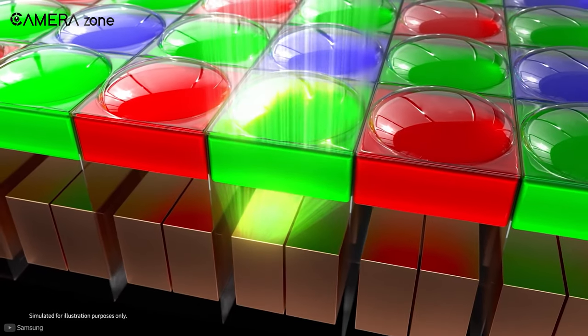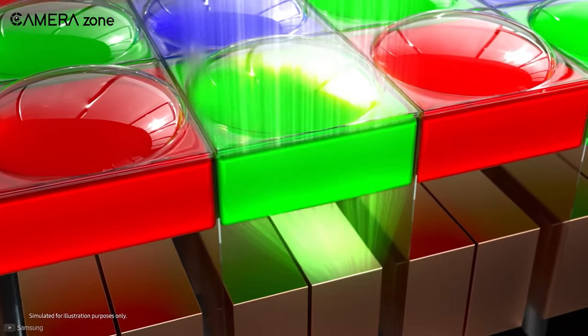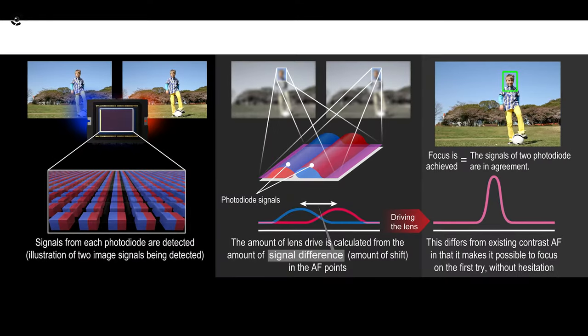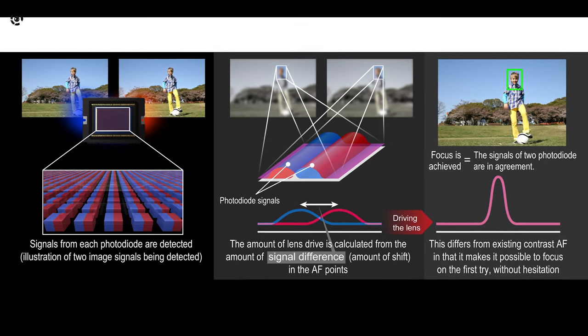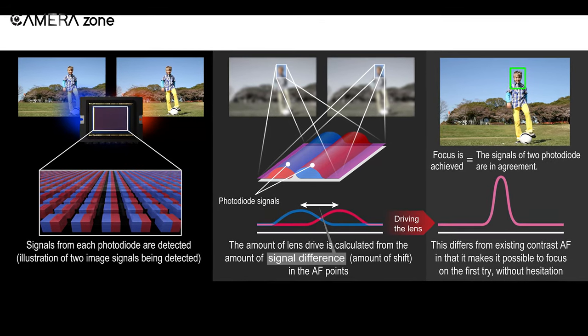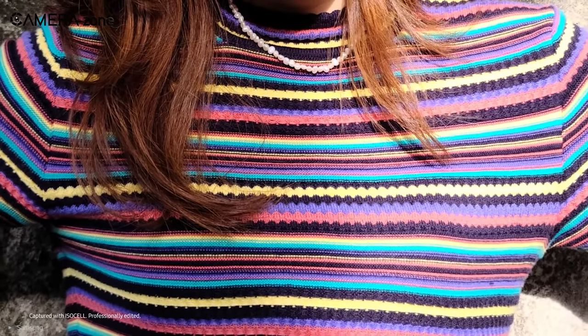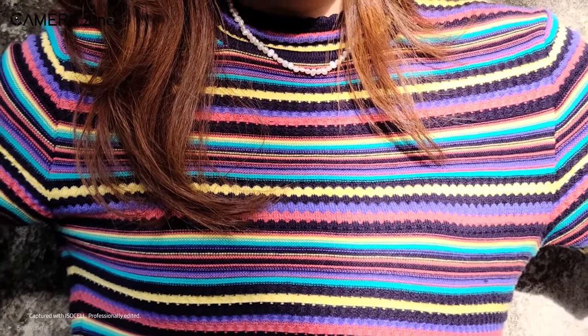The phase detection autofocus system consists of a sensor and micro lenses. If the light passing through these micro lenses converges to the center of the autofocus sensor, the image is deemed to be in focus. On the other hand, if the two beams of light don't converge to the center of the sensor, the camera deems the image to be out of focus. The greater the distance between the two light beams, the more out of focus the image looks.